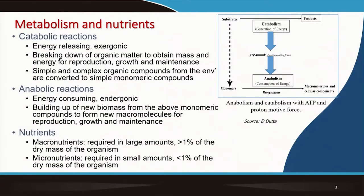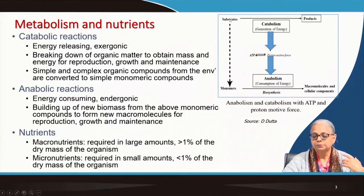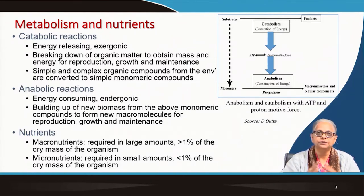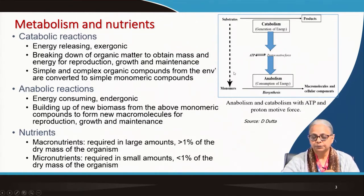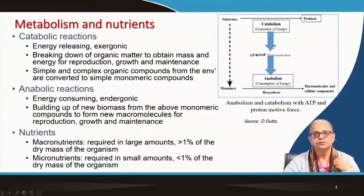Let us take a look at what we mean by metabolism. Metabolism has two parts to it: catabolism and anabolism. Here we have our substrates — food for the bacteria — and they take up these substrates. When an organism takes up a particular food or substrate, that substrate has to be broken down. These are macromolecules, biological polymers, and they must be broken down first into their monomeric units. This process of breaking down large molecules into monomeric units is an energy-releasing reaction — these are catabolic reactions, as shown in the figure.